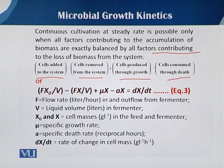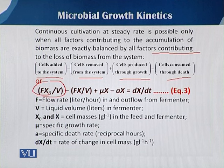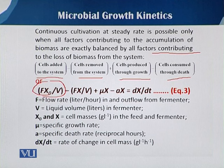When we say that cell added to the system, we can express it as f·x₀ over V. Here f is the flow rate and x₀ is the amount of biomass added as inoculum. V is the volume of the medium inside the fermenter — the volume at the time of inoculum addition.